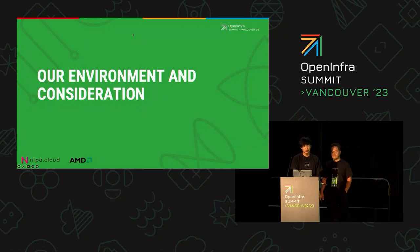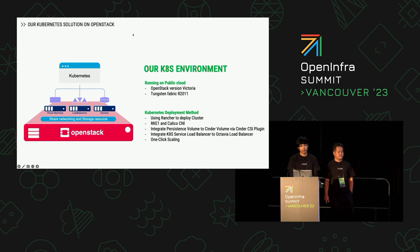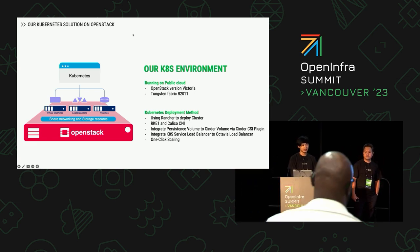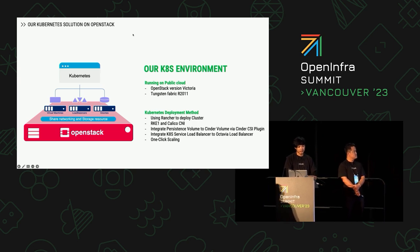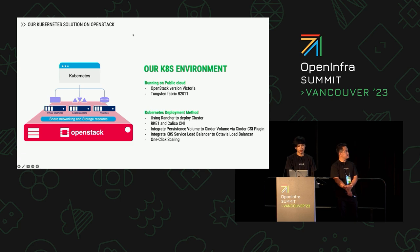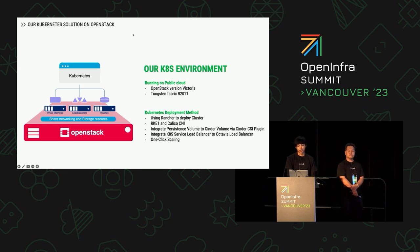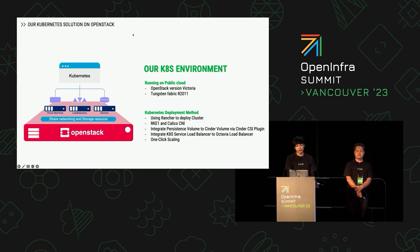Our Kubernetes environment runs on our OpenStack public cloud. We utilize OpenStack Victoria integrated with the SDN Tungsten Fabric as a Neutron plugin, using Rancher RKE1 and Calico CNI on every setup. Our cluster integrated with the OpenStack API allows us to enjoy several benefits: persistent volumes from Cinder, access to load balancers from Octavia, and the ability to scale our cluster up or down with a single click. By combining the power of Kubernetes with the capability of OpenStack, we have created a robust and scalable Kubernetes environment.